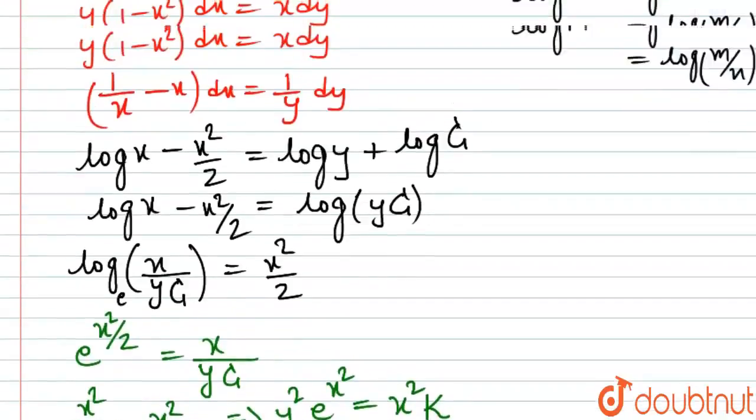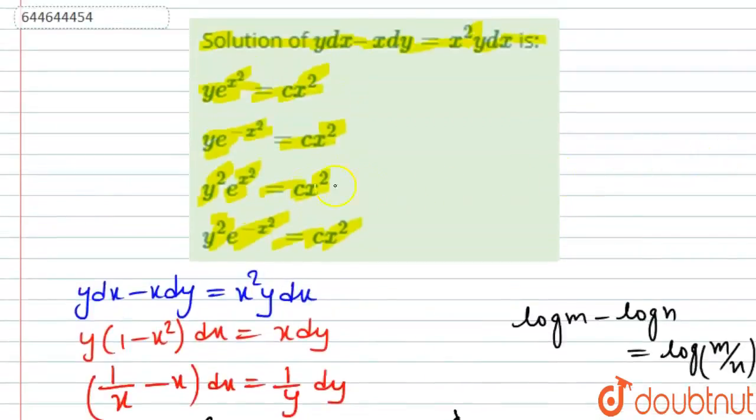y square times e power x square, that is equal to x square times a constant. This option here is the correct choice. Thank you.